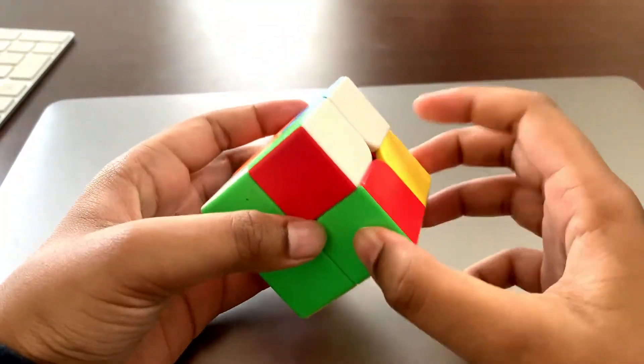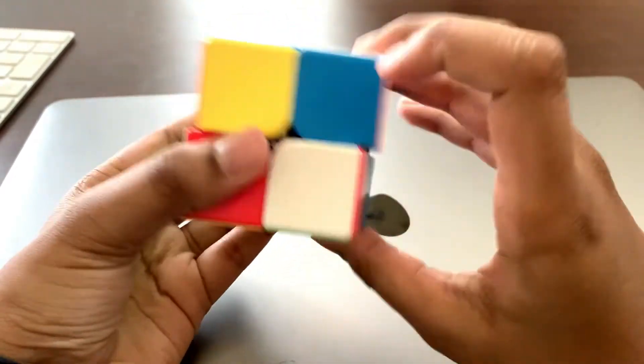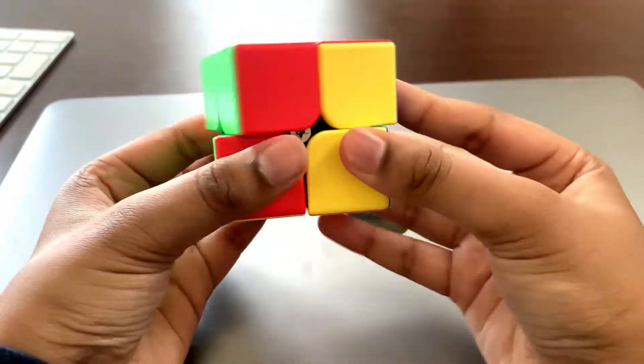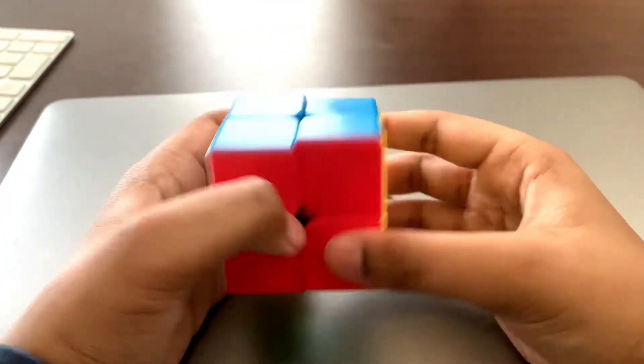We just have to turn the cube upside down and do the right-hand algorithm until the yellow side faces the bottom. Okay now turn the cube. Keep on doing the right-hand algorithm until the yellow side faces down. We're almost there. And we just have to turn it and we solved it. Look.